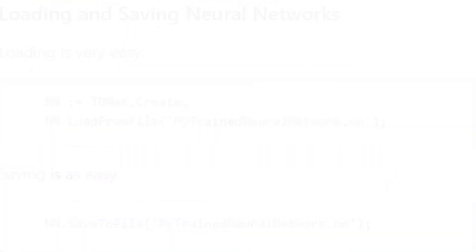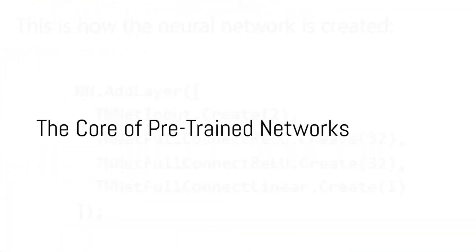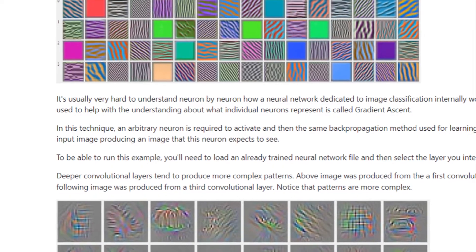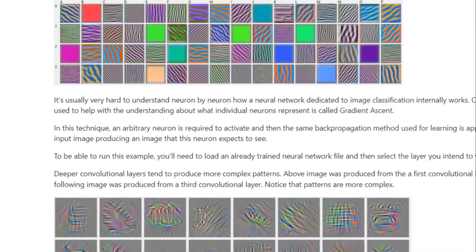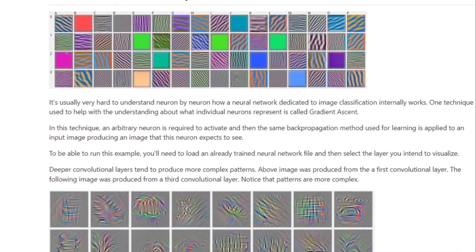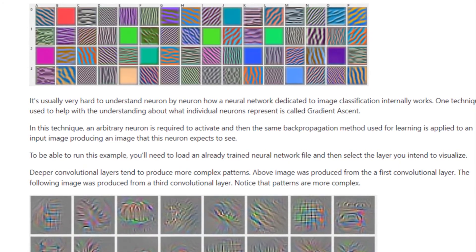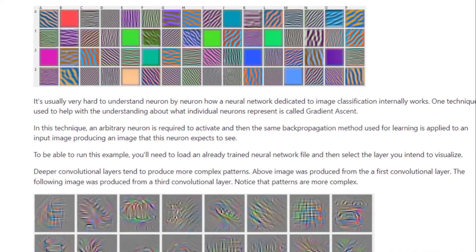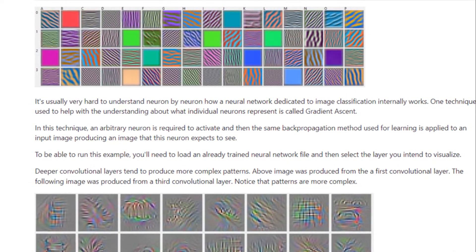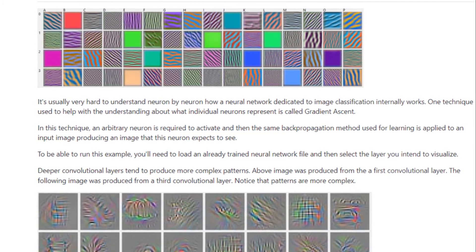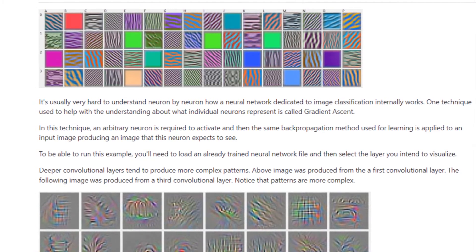But how do these networks operate? At their core, pre-trained neural networks are based on layers. Each layer learns to recognize different features from the input data. The initial layers may recognize simple patterns like lines and edges, while the deeper layers can identify more complex features, like shapes or objects.